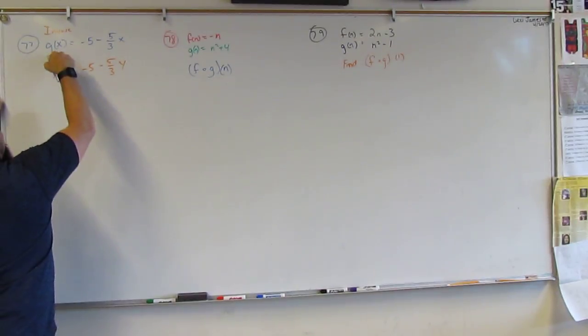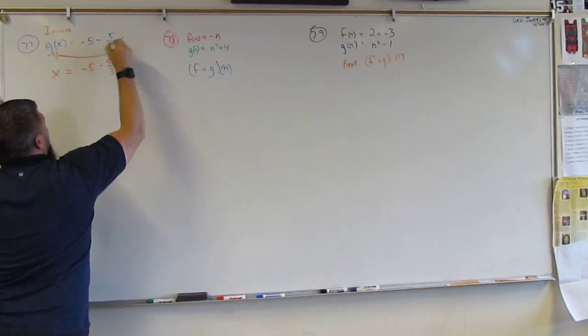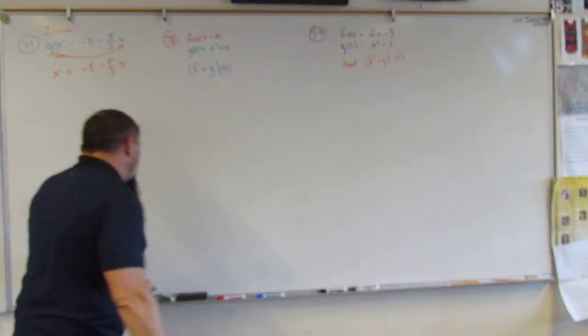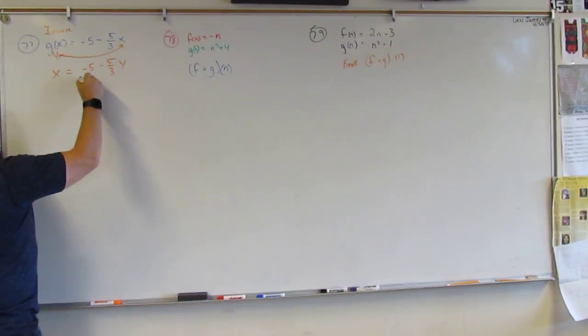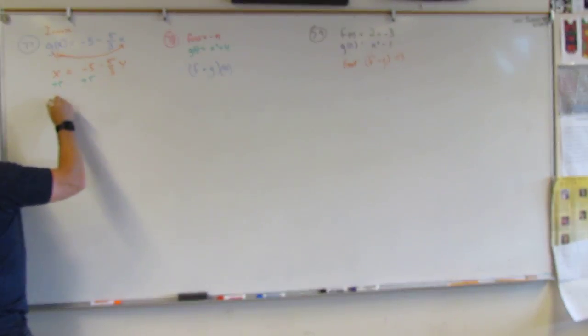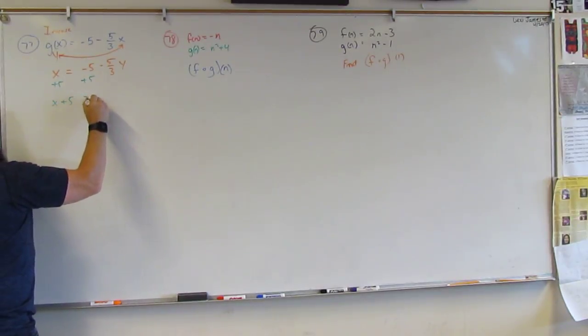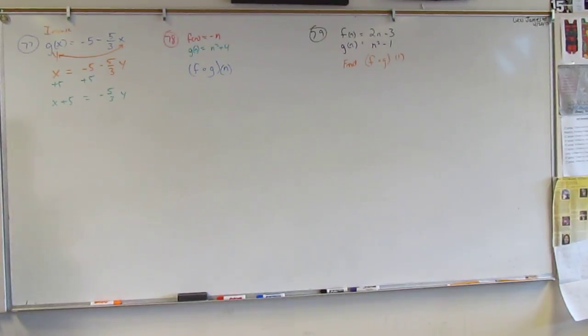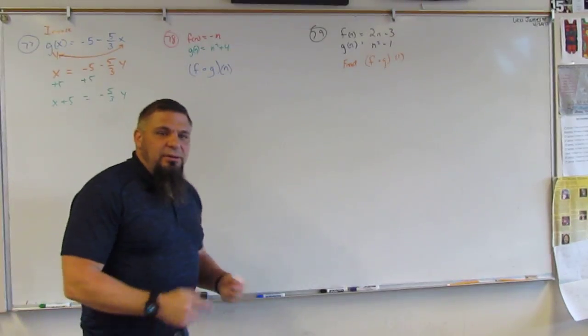So this is X, this is Y. What we're doing is we're switching them. And then we're going to solve for Y. So I have to add 5, I have to add 5, get X plus 5 is equal to negative 5 thirds Y, right? Then I've got to get Y alone. How do I get Y alone?